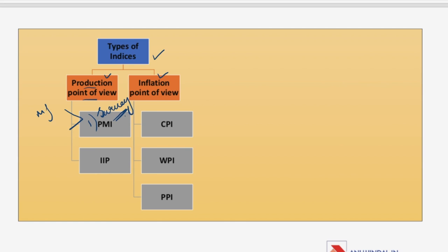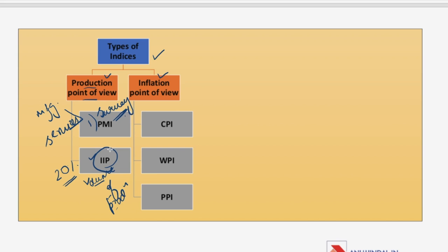The next is IIP — the Index of Industrial Production. It is a composite indicator that measures the changes in the volume of production. For example, if in June the production of cars is 50 units and in July it increases to 60 units, that is a 20% rise. Based on such volume of production, this index is calculated.